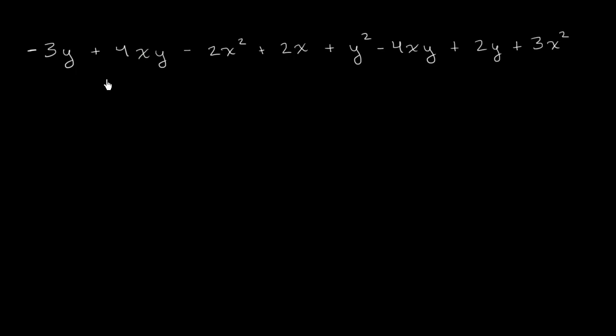This one is even crazier than the last few we've looked at. We've got y's and xy's and x squareds and x's and y squareds and on and on. There will be a temptation because you see a y here and a y to say, maybe I can add this negative 3y plus this 4xy somehow since I see a y and a y.